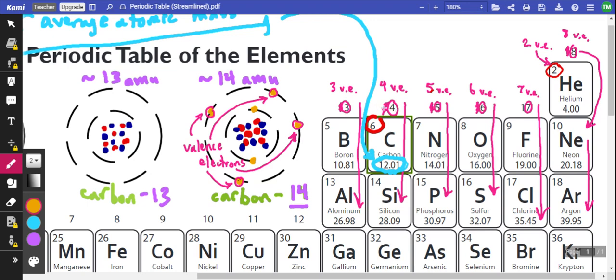Column 14 becomes four as we scratch out the one here. So everything in column 14, carbon, silicon, germanium, all these guys have four valence electrons. Everything in column 15, scratch out the one, has five valence electrons. Everything in column 16 has six valence electrons. Column 17 has seven valence electrons. And everything except helium in column 18 has eight valence electrons.